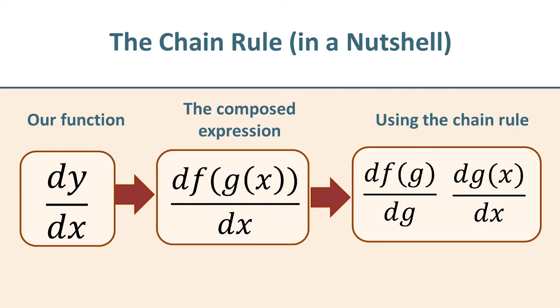We're going to have the original dy dx, and it is the derivative of a function of a function of x. And when we apply the chain rule, what we do is we split that composed expression into two parts. We take the derivative of f with respect to its internal function, and then we take the derivative of that internal function with respect to x.